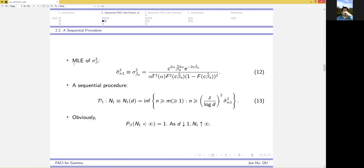We adopt this MLE and propose the following sequential procedure. Here's the associated stopping rule, where m indicates a pilot sample size. That is, after collecting a pilot sample of x1 to xm, we check the condition whether m is greater than or equal to c over log of d squared times sigma m1 hat squared.